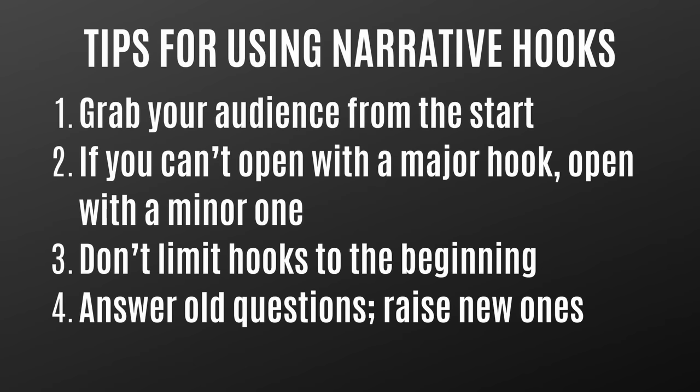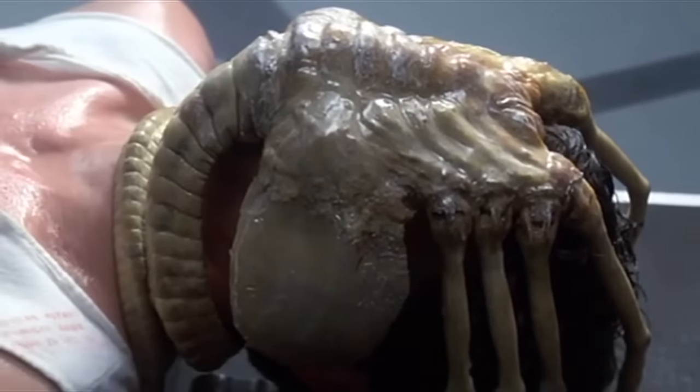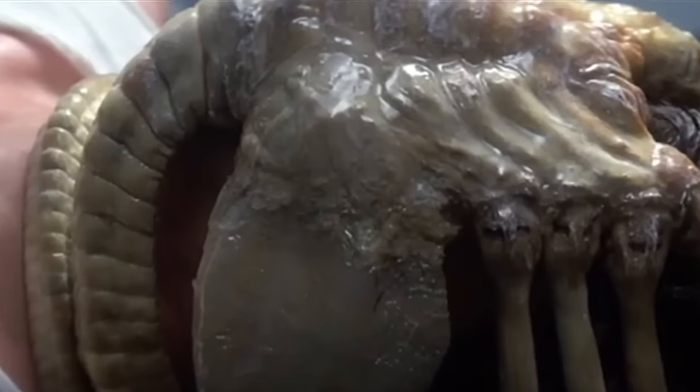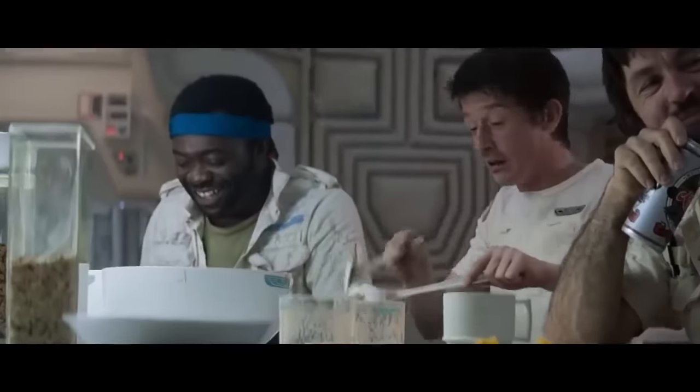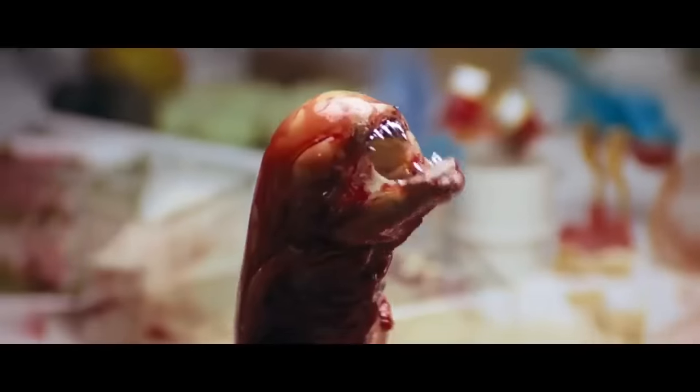An example comes from the movie Alien. Early on, there is a major hook when the facehugger creature latches onto Kane's face, raising questions like: what is that thing on Kane's face? What is it doing to him? Why won't it let go? Then eventually it does let go, raising the question: what was the whole point of all that? In the middle of the story we get our answer with the chestburster scene. And beyond that there are still more questions — where did the chestburster go? How are the heroes going to stop the alien?